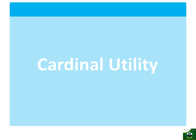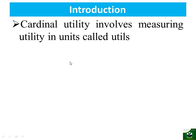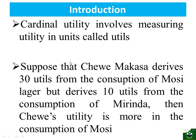We can begin with a brief introduction. Cardinal utility involves measuring utility in units called utils. With these units we will be able to differentiate utility levels between or among different consumers. For example, suppose that Chewe Makasa derives 30 utils from the consumption of Mossi Lager but derives 10 utils from the consumption of Mirinda. Comparing the two, we see that Mossi Lager gives him more utility than Mirinda.